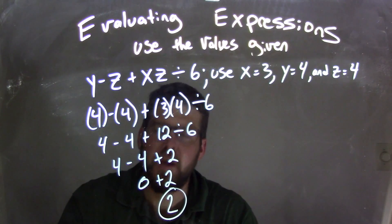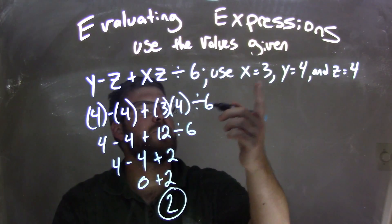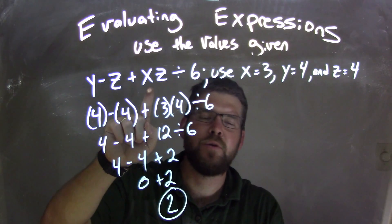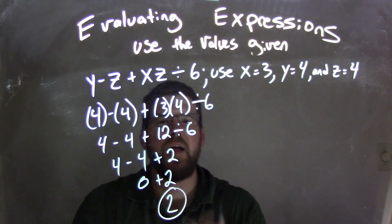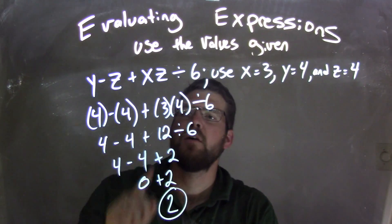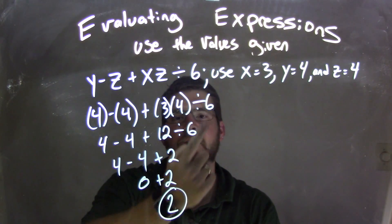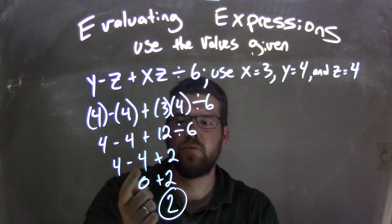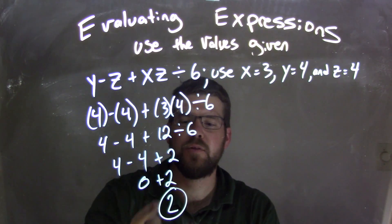And there's our final answer. So again, let's recap. We took each one of these variables, we plugged it in. Our first step was that multiplication, when you see x and z next to each other, that means x times z. So 3 times 4 is 12, we then divide it by 6 to get 2. 4 minus 4 is on the outside, 4 minus 4 happened, we have 0, and 0 plus 2 is 2.